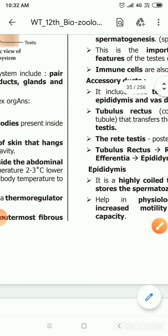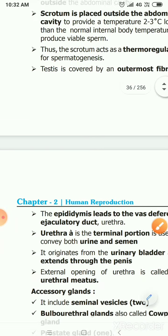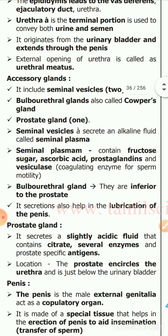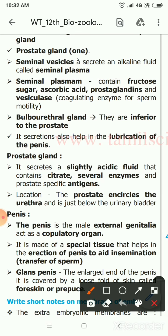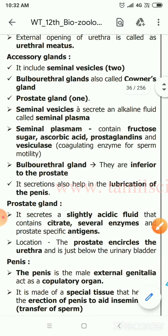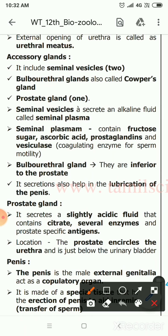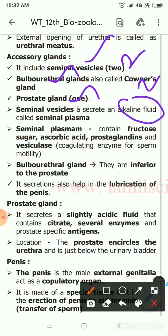The accessory glands consist of seminal vesicles, bulbourethral glands, and prostate gland. There are two seminal vesicles, a pair of bulbourethral glands (also called Cowper's glands), and one prostate gland. The seminal vesicles secrete an alkaline fluid called seminal plasma.